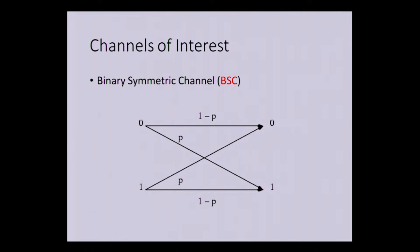The next channel is the binary symmetric channel. The sender sends a bit 0 or 1, and the bit is flipped with probability p and passed as such with probability 1 minus p. Just like the BEC, we have security properties: if the receiver gets a bit, it does not learn whether the bit is the original or the flipped bit, and similarly the sender does not learn whether the receiver received the flipped bit or the original bit.